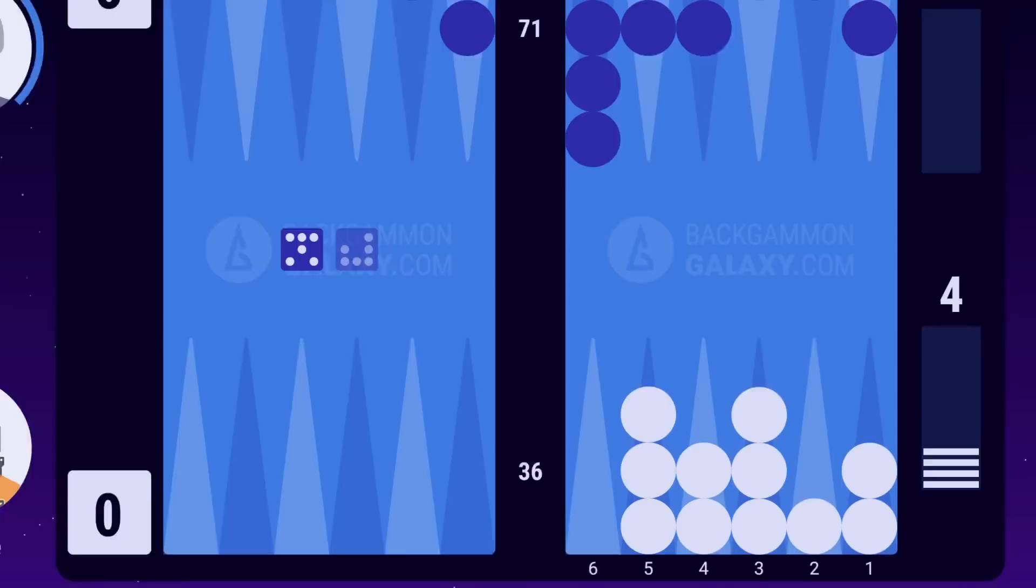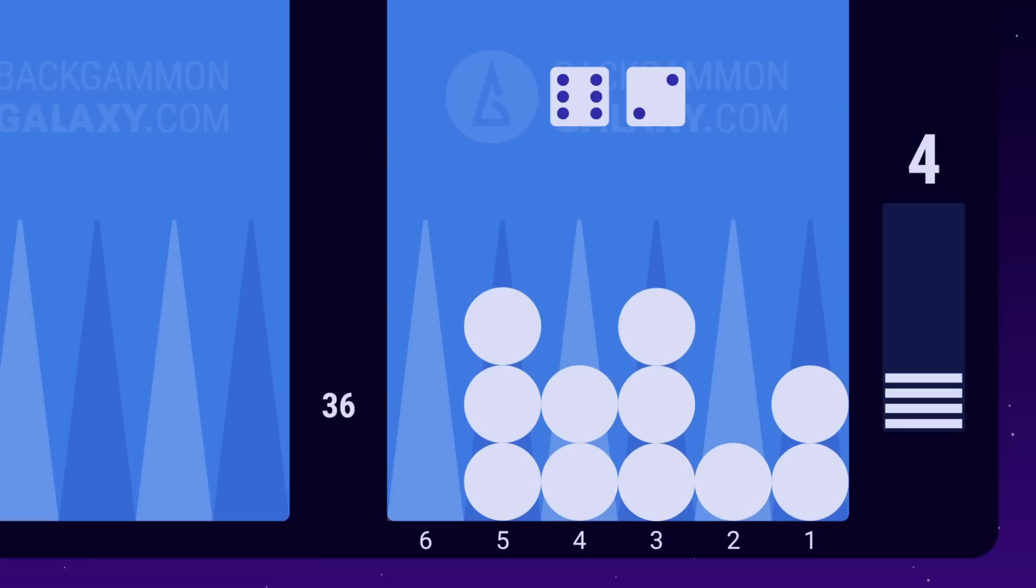Blue rolls 3-5 and moves his checkers. White rolls 6-2. Since he no longer has any checkers on the 6 point, he must use the 6 to bear off the backmost checker, which is on his 5 point. The 2 can be moved with any of these checkers. But since backgammon is a racing game, it's a good idea to be greedy when bearing off, especially when there are no threats of being hit by your opponent.